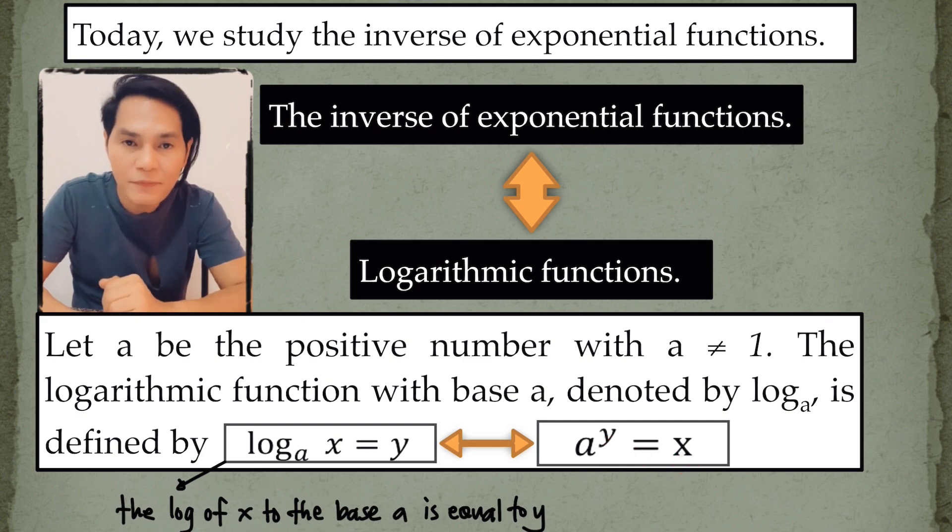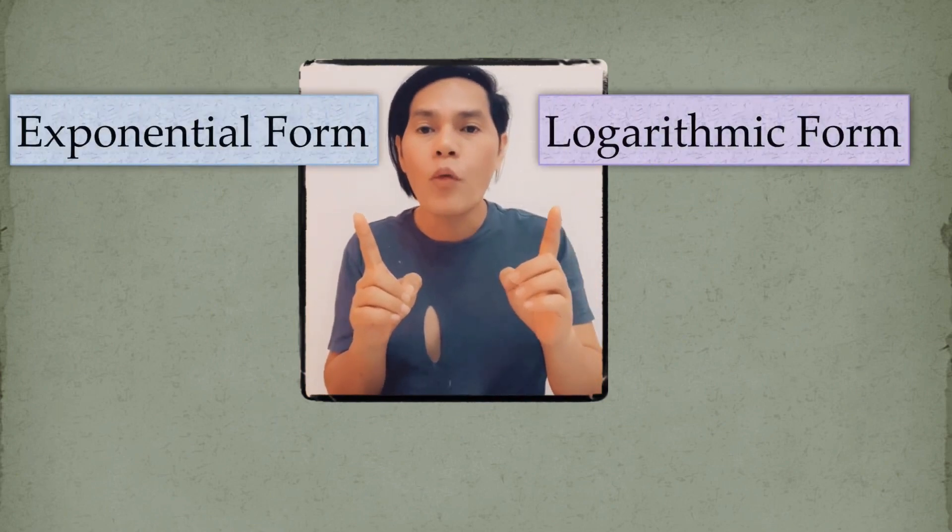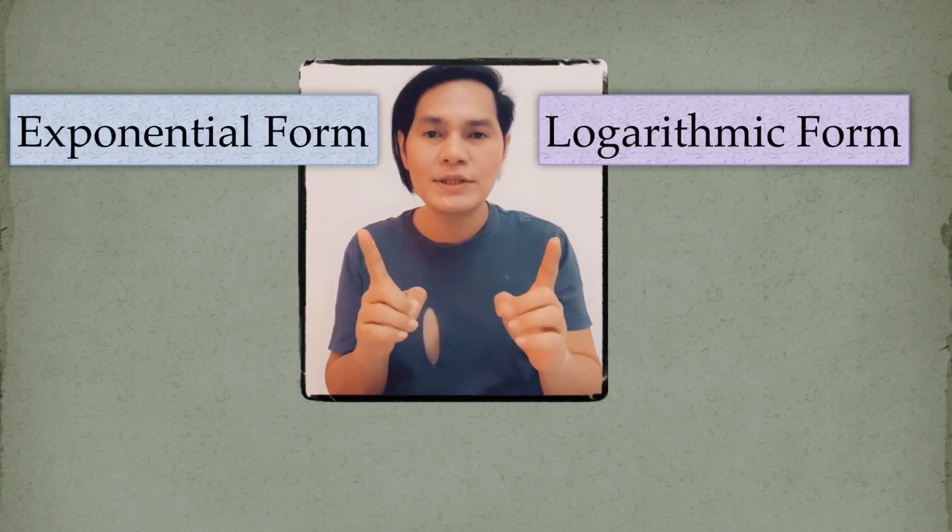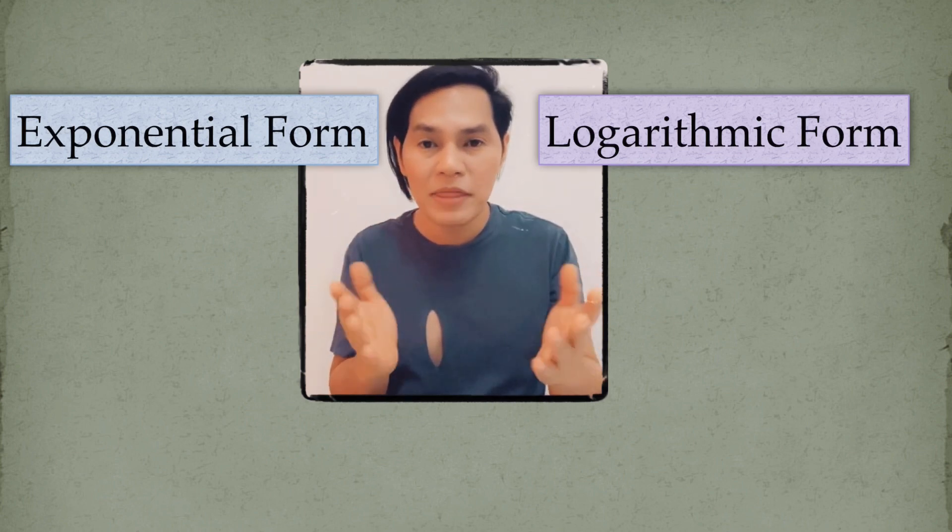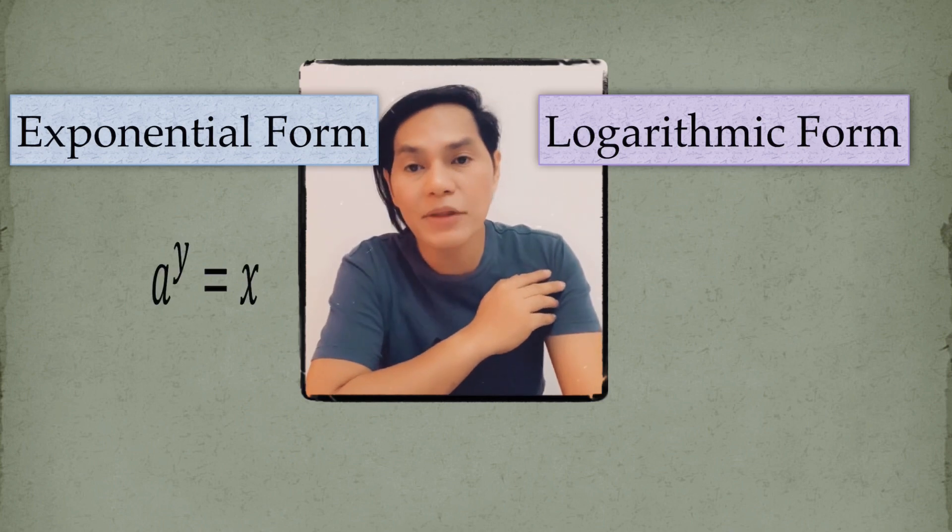To explain further, let's have this. I have two things here with me: the exponential form and the logarithmic form. What I'm going to show you today is how we're going to represent them mathematically. To start with, I have here the exponential form, which is A to the power of Y is equal to X. That's how you read that.